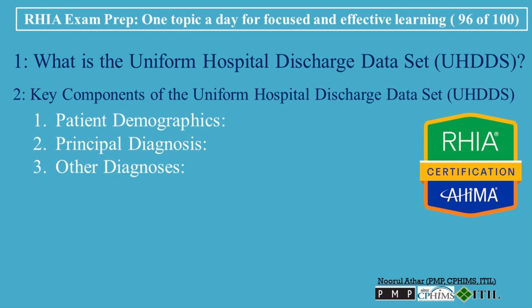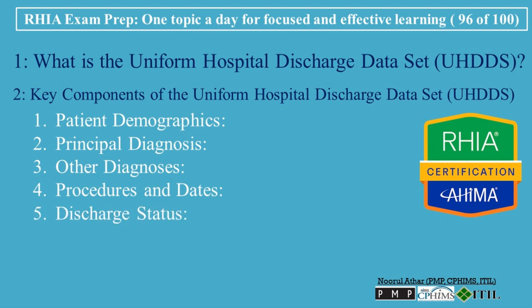Secondary diagnoses are important for understanding the full scope of the patient's health status and can also affect reimbursement. UHDDS also includes information on procedures and the dates on which they were performed, helping assess the level of care provided and impacting the DRG assignment. The discharge status field indicates the patient's condition at discharge, such as whether they were discharged home, transferred to another facility, or expired.